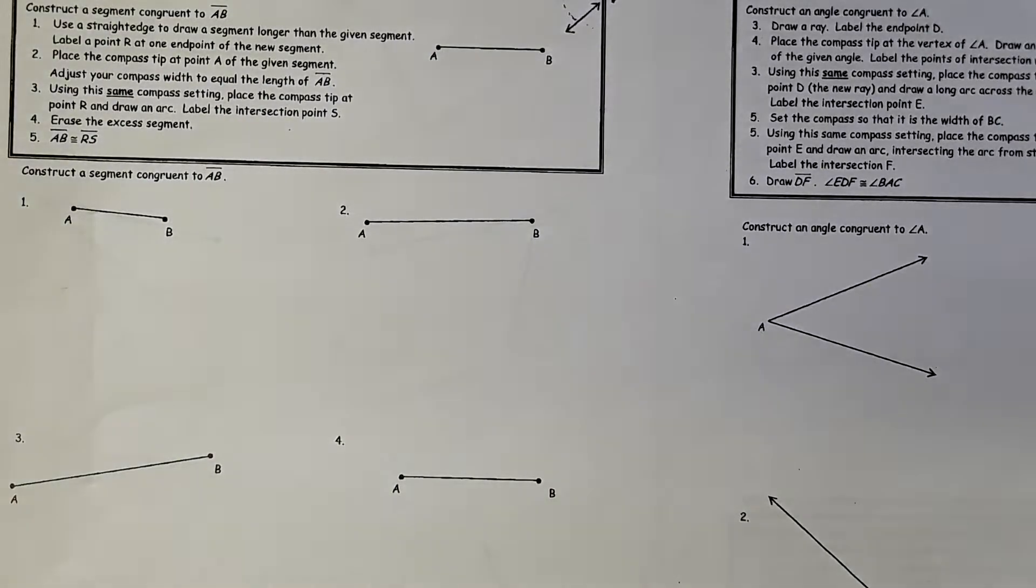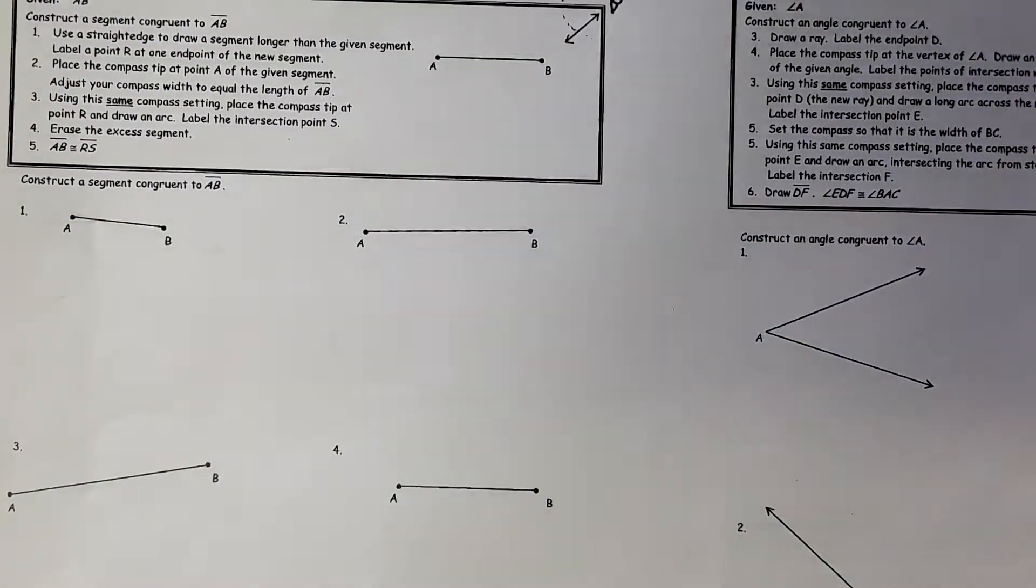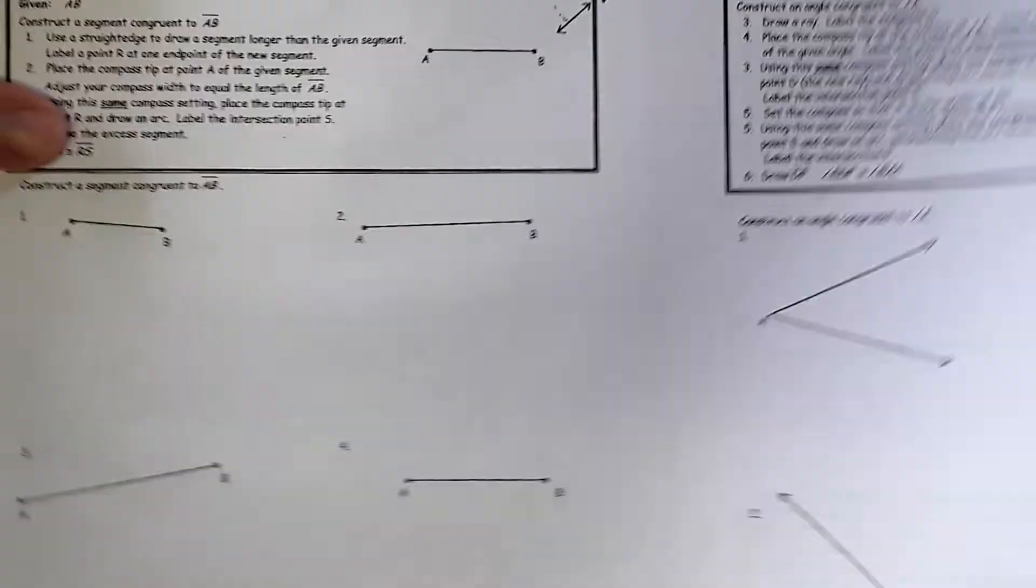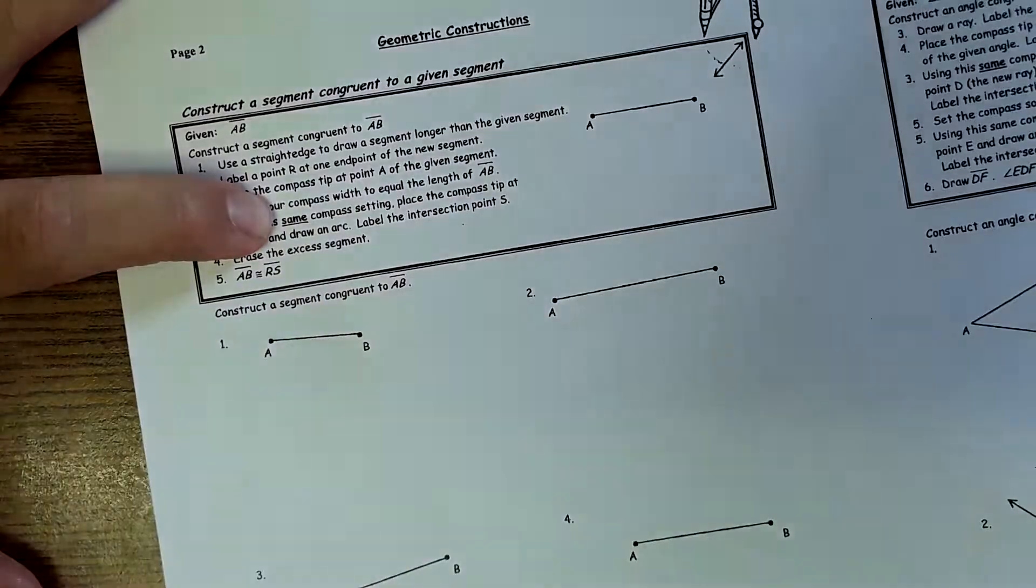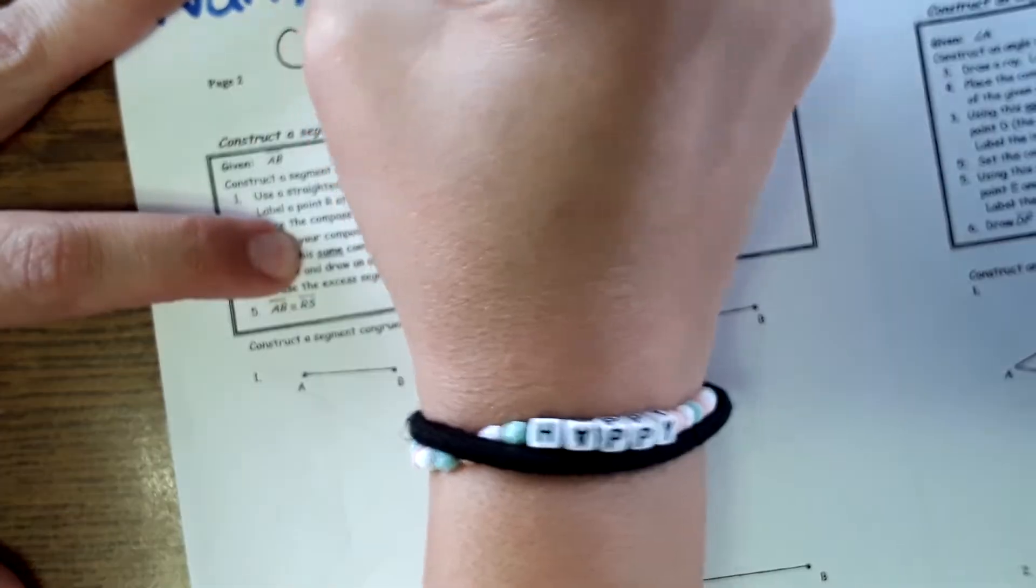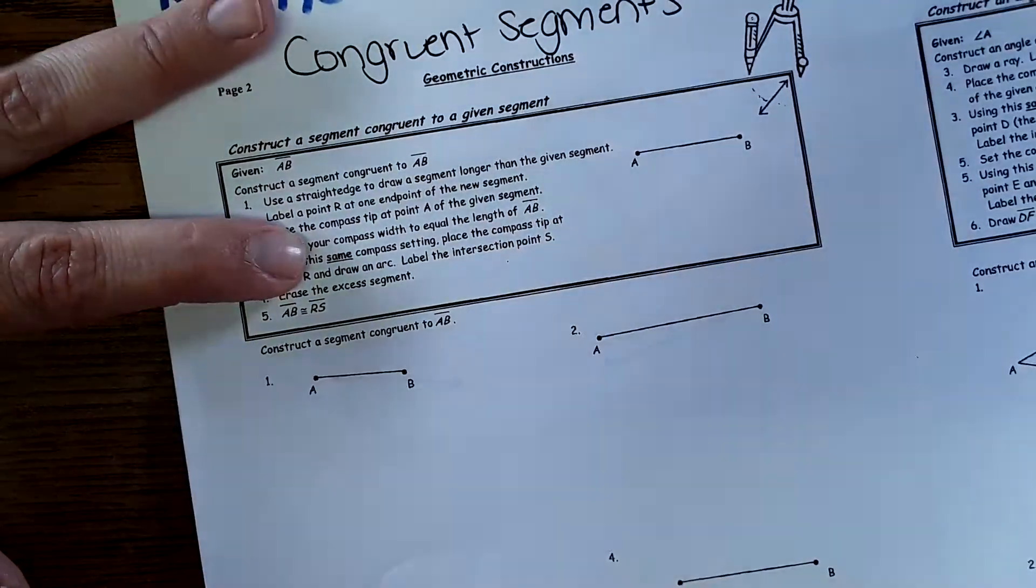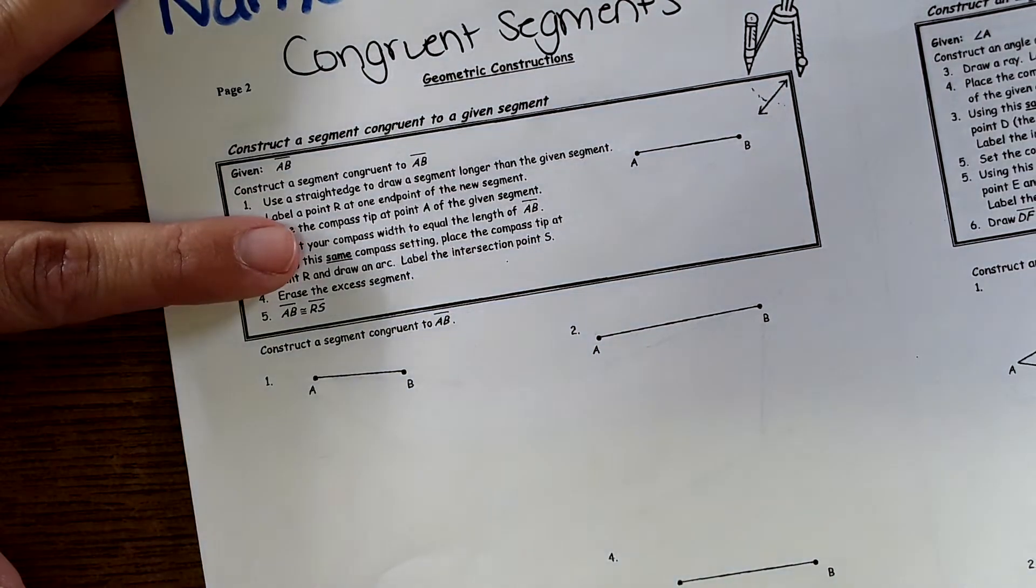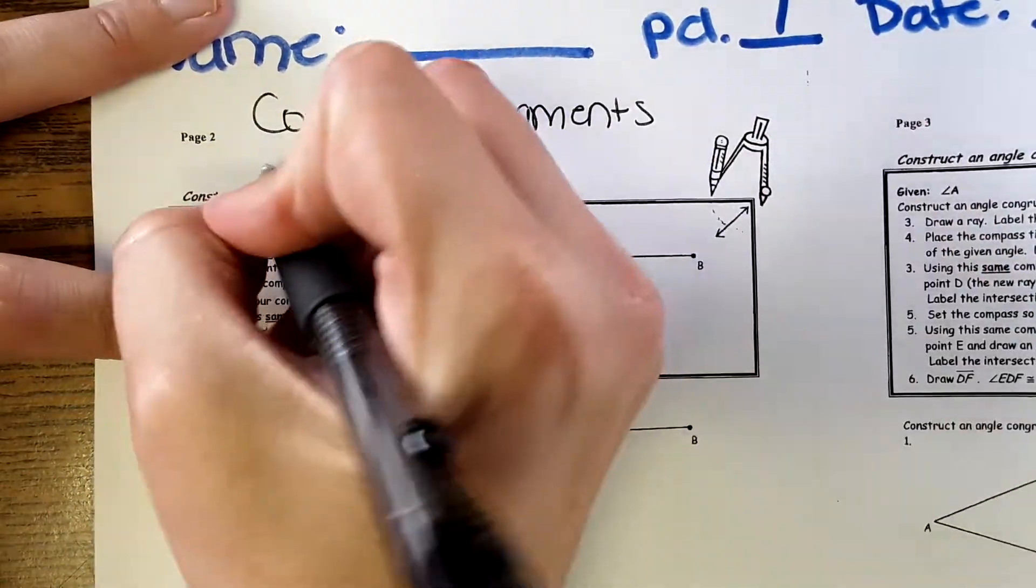Okay, so each one of these constructions is a specific drawing. The first one we are going to be drawing is congruent segments. So whatever I write, write what I write: congruent segments.